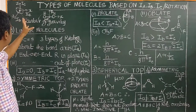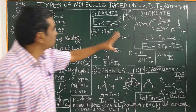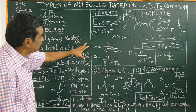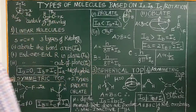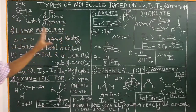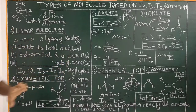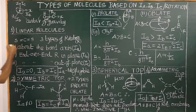Based on the rotational constants A, B, C — or equivalently Ia, Ib, Ic — there are four types of molecules. First, let us consider linear molecules. In linear molecules, the atoms are arranged in a straight line, and Ia = Ib = Ic in their characteristic relationships.